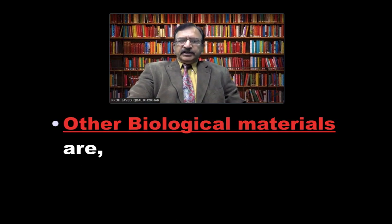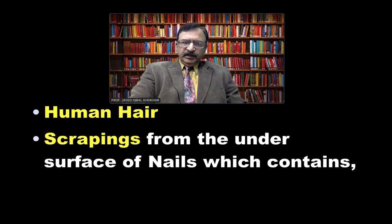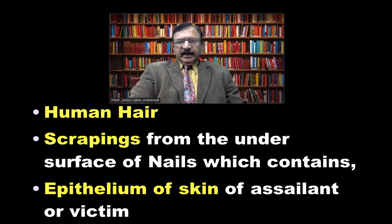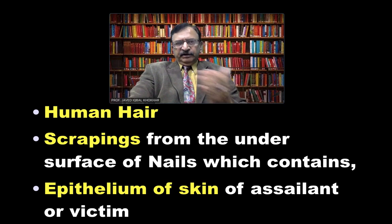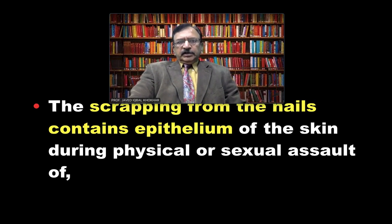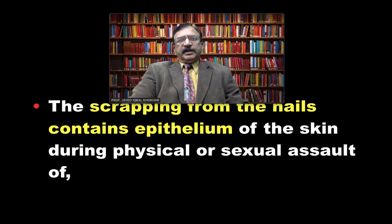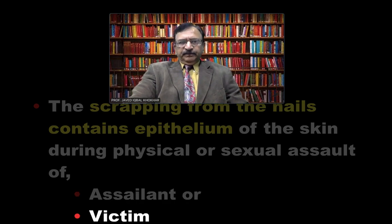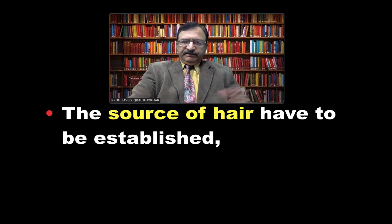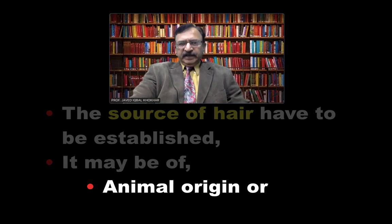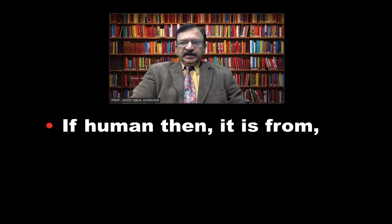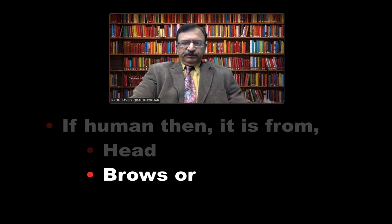Other biological material that can be found includes hair — human hair — and scrapings from under the nails, which contain the epithelium of the skin from either the assailant or the victim. The assailant will have scrapings of the victim's epithelium, and the victim will have scrapings of the assailant's epithelium, particularly in cases of physical or sexual assault. If hair is found, we must establish whether it is of animal or human origin, and if human, whether it is from the head, eyebrows, or pubic area.